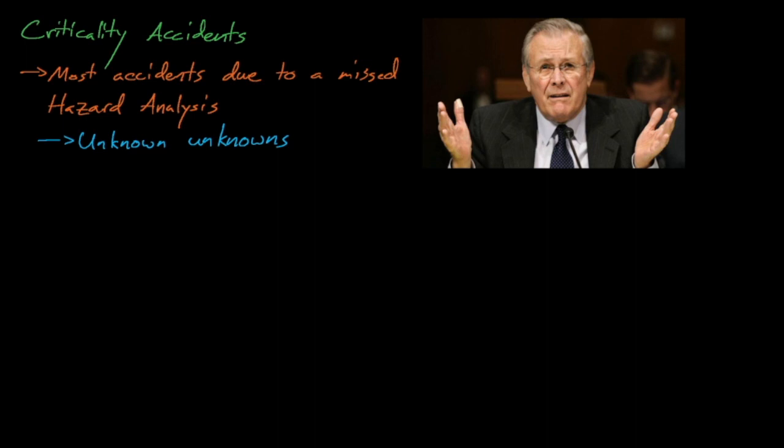What we'll see is that most criticality accidents happen because the site hazard analysis misses ways that things could go wrong. In other words, it's the unknown unknowns that get you and cause criticality accidents. An accident is by definition an unplanned event, and thus they are usually caused by dangers that we didn't even realize existed.